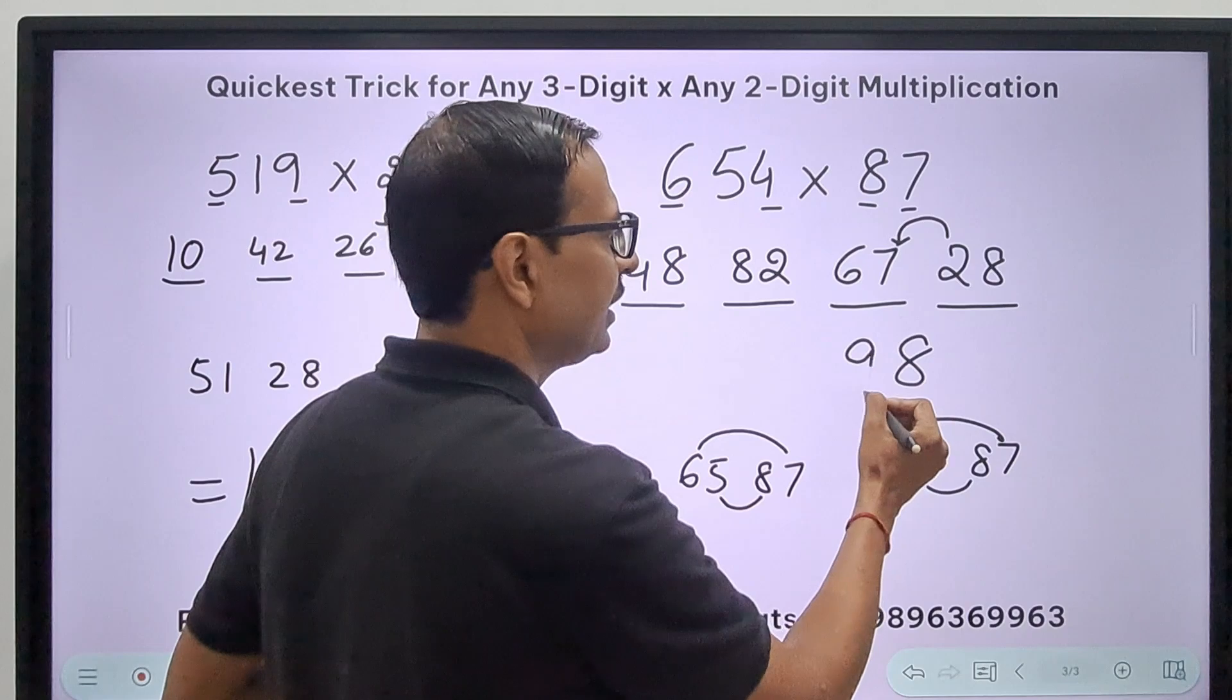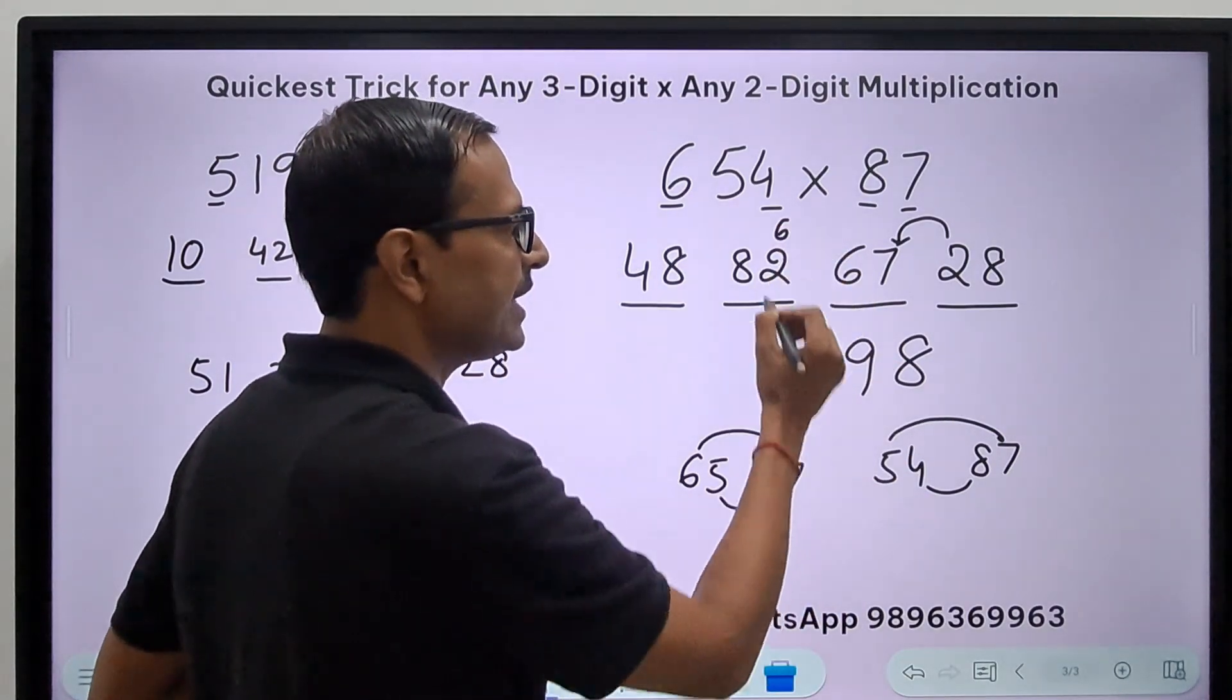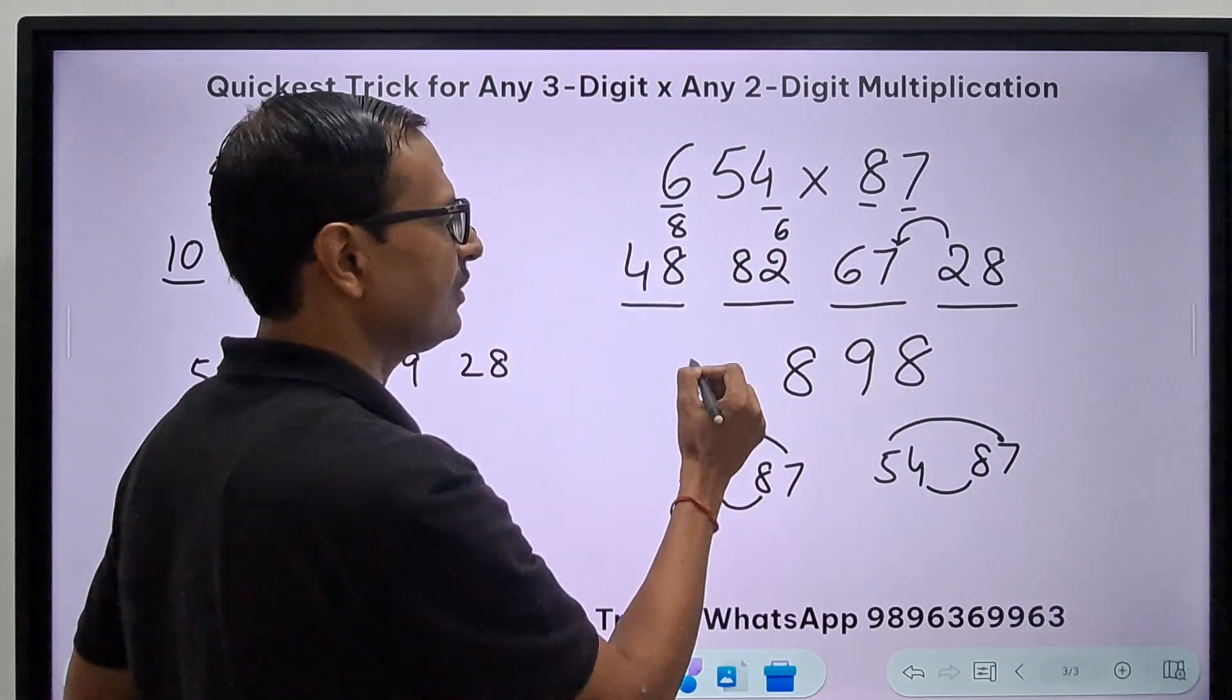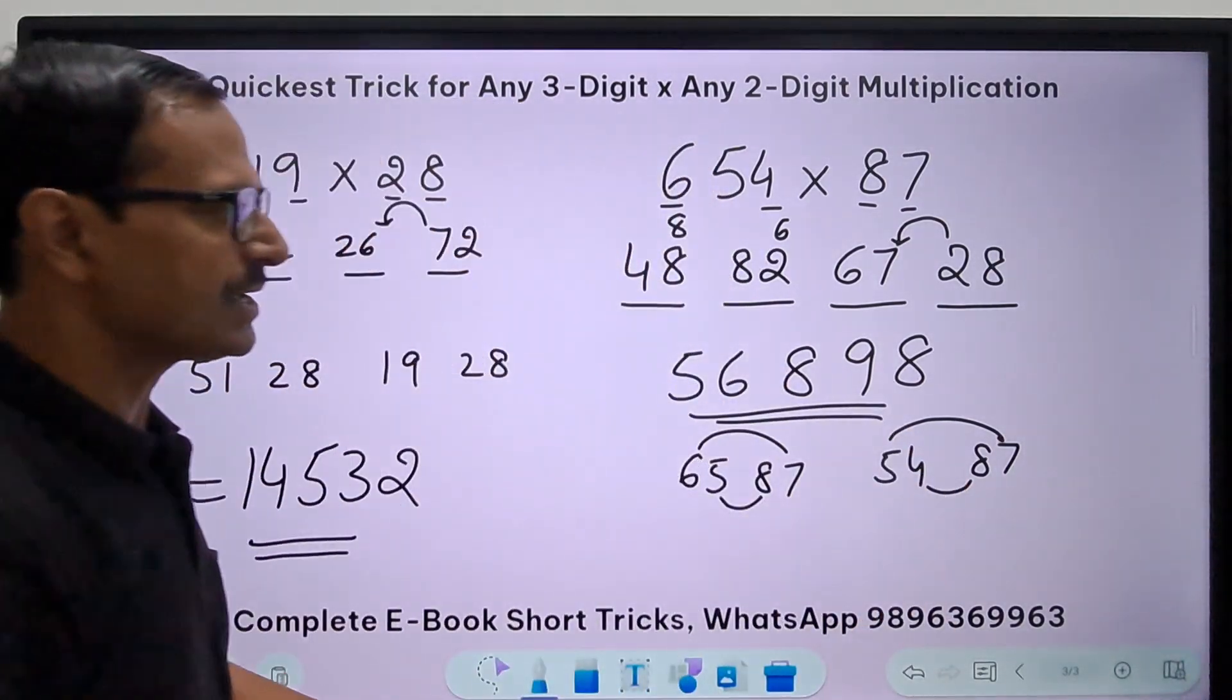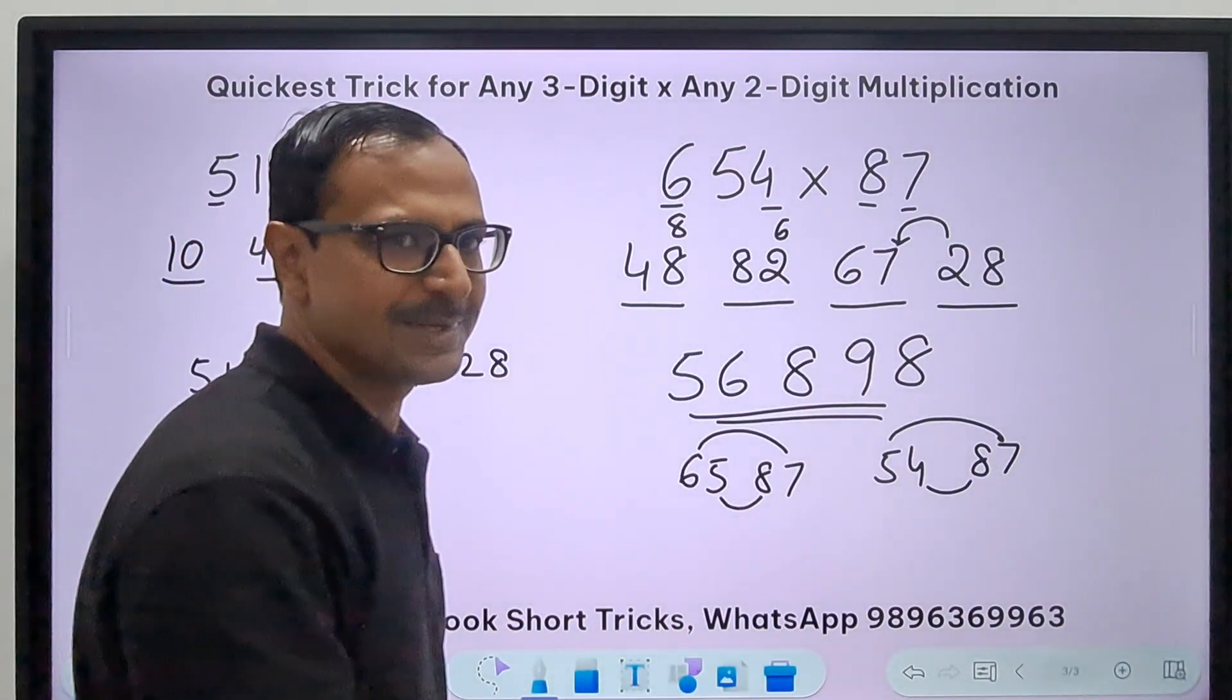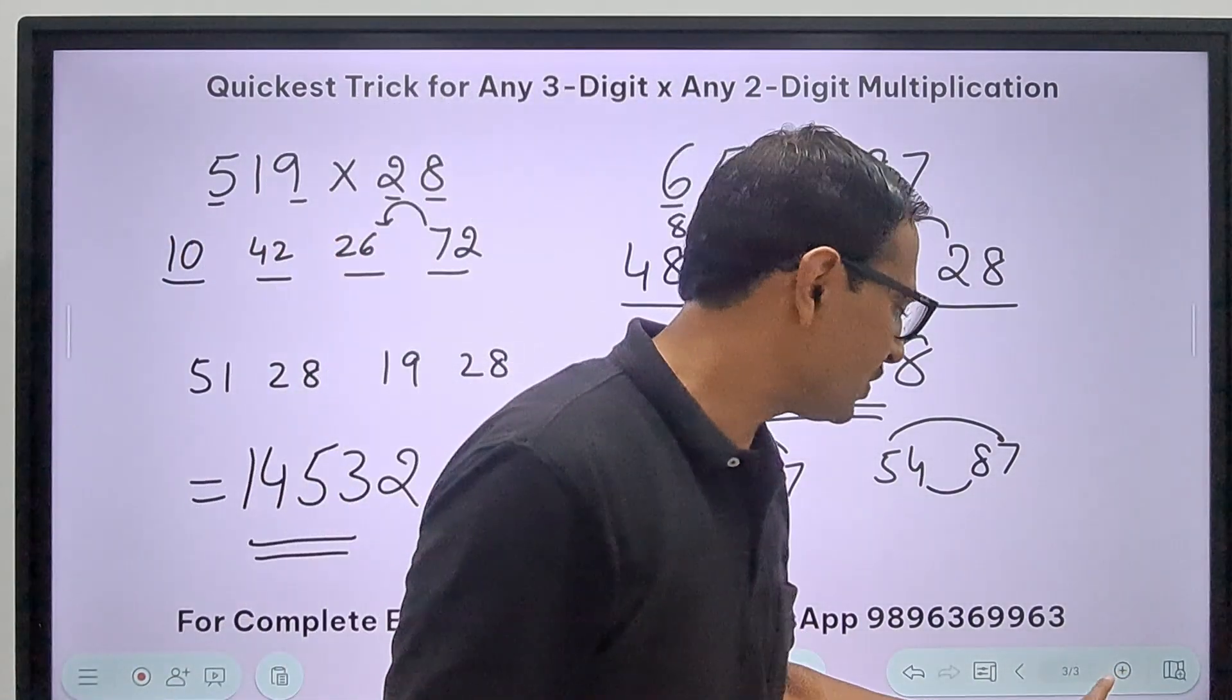Now the first two numbers, 65 with 87 and 54 with 87. So this is 42 and 42. This is 35 and 32, 67. And so 8 retains its place, 2 goes here and makes it 69, so 9. 6 goes here makes it 88, so 8. 8 goes here and makes it 56, thereby giving you 56,898 as the product of the numbers.